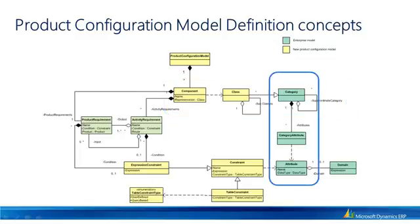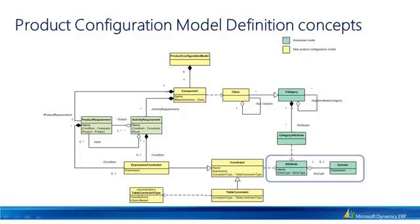A component may have zero or more attributes which model different definitions on the component. Each attribute will have a data type and a domain which expresses the possible values that could be assigned to the attribute.